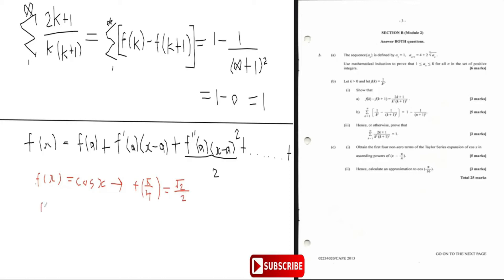If f of x is cos x, then f prime of x is minus sine x. So f prime of pi by four, plugging in x as pi by four, gives us minus root two over two.